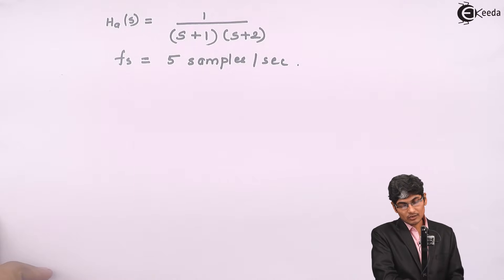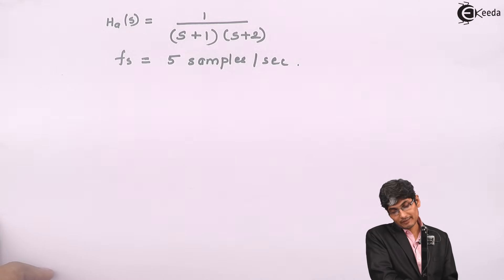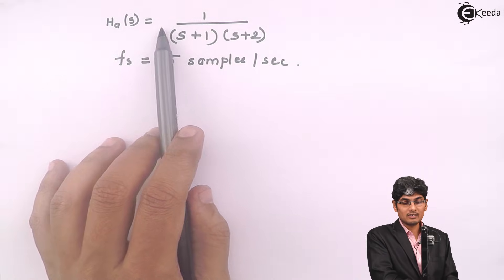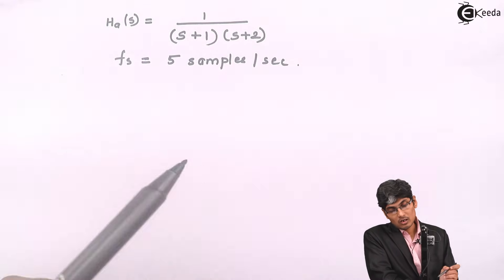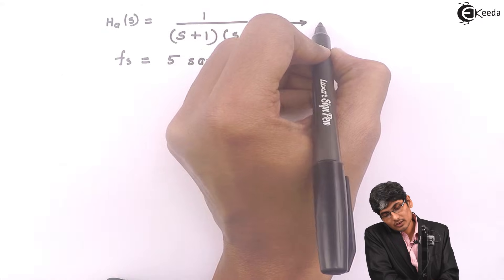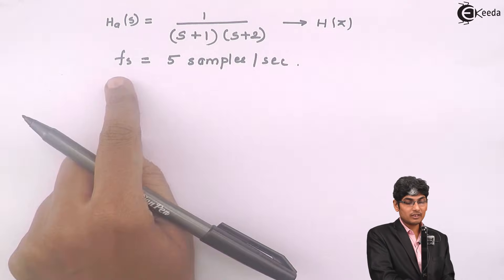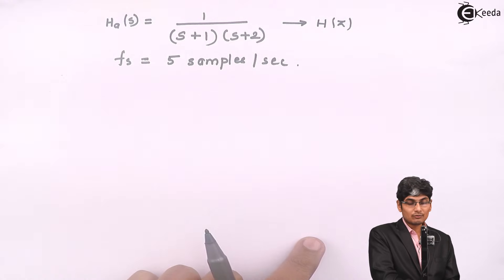Hi friends, let us today understand how to solve a problem using the impulse invariance method. The problem is: given H_A(S) = 1 / ((S+1)(S+2)), we need to transform this to H(Z) with a sampling frequency of 5 samples per second, using the impulse invariance method.